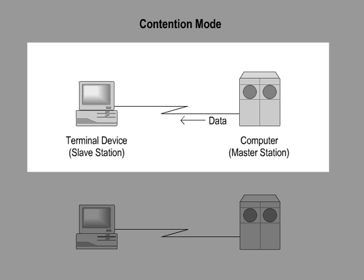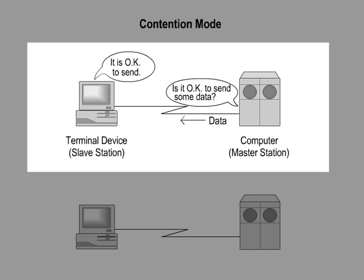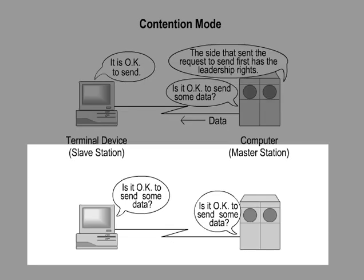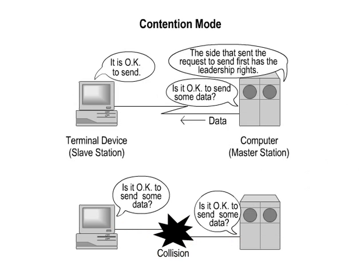The other station is called the slave, or secondary, station. The station that wants to send data to the other station transmits a request to send. When the receiver station is ready and after it sends a positive acknowledgement to the transmitter station, data transmission begins. Either station can become the master station by sending a request to send on a first-come basis.